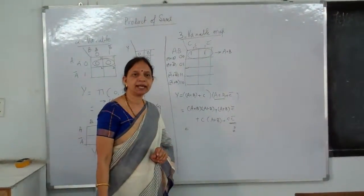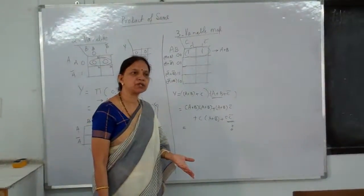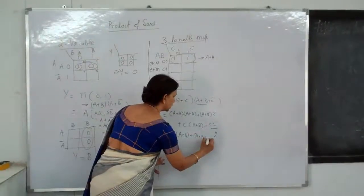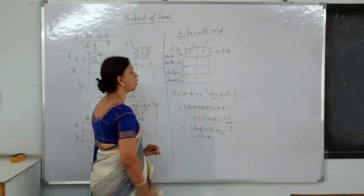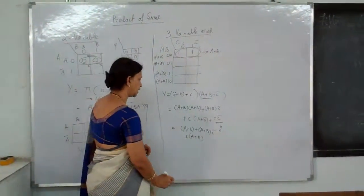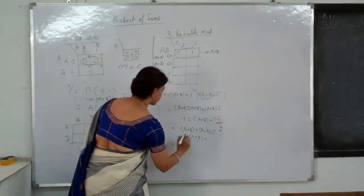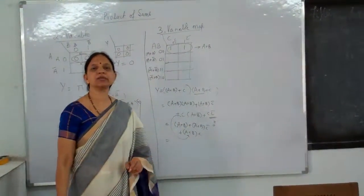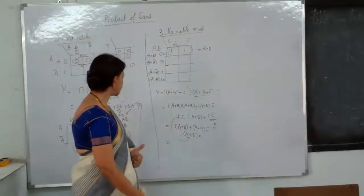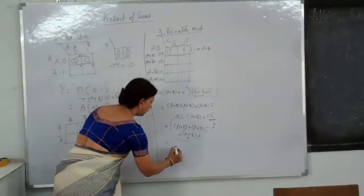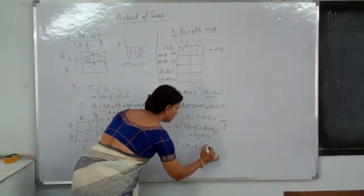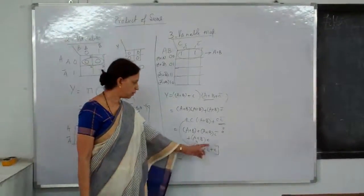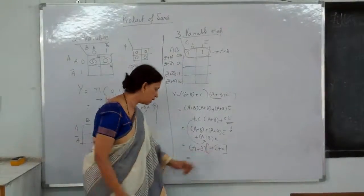A·A is A, B·B is B, so (A + B)·(A + B) should equal A + B. You can also write it as C·(A + B) using commutativity. So A + B is common, giving (A + B)·[1 + C-bar + C]. C-bar + C = 0, so 0 + 1 = 1, giving 1·(A + B) = A + B. Are you getting it?